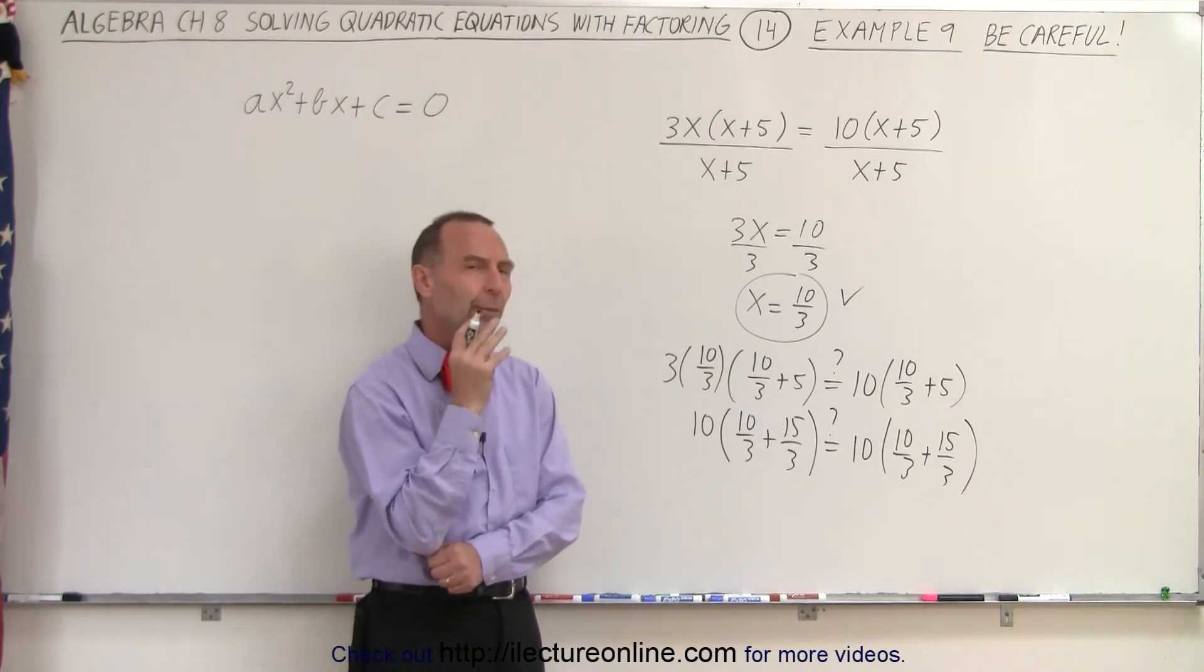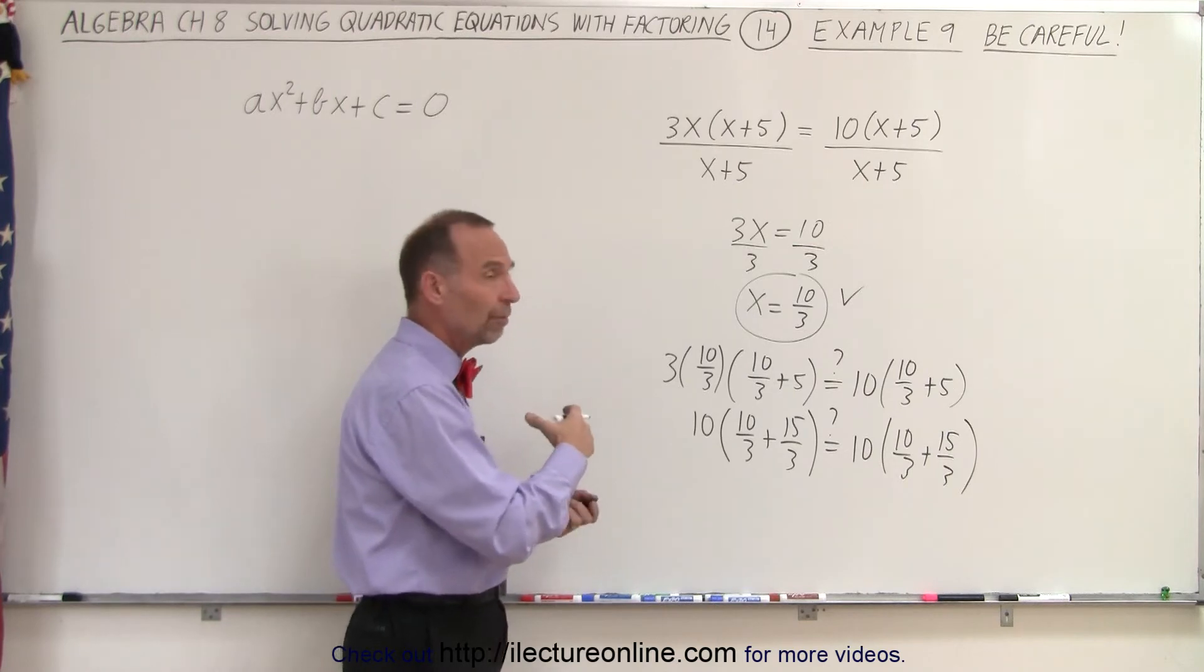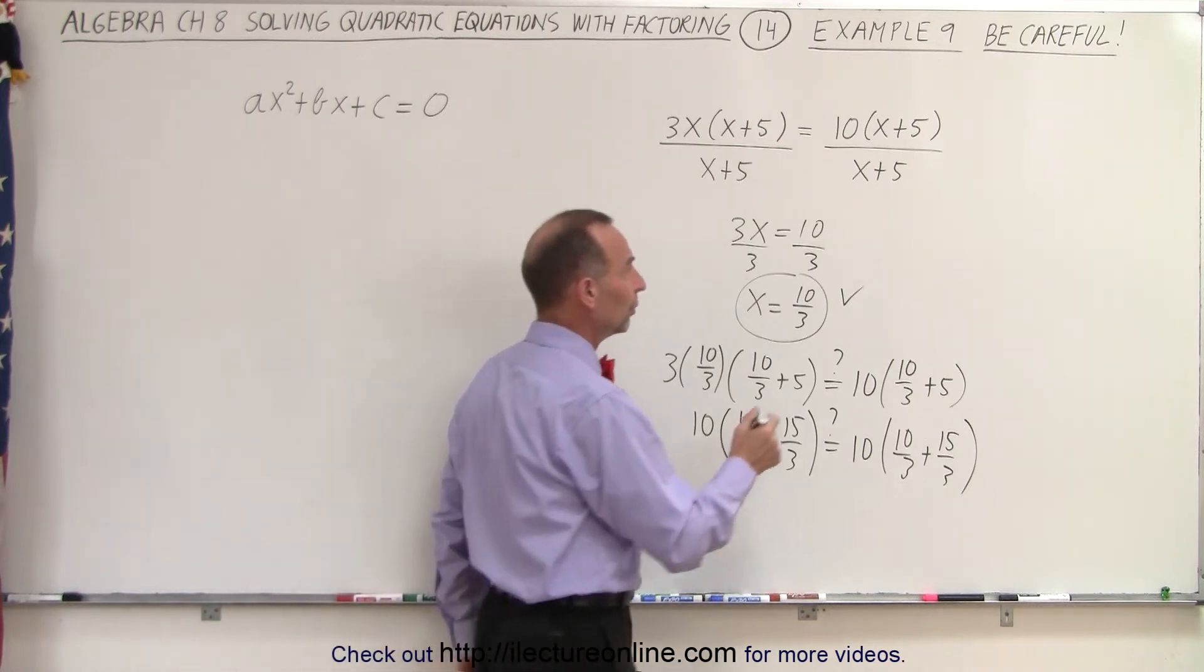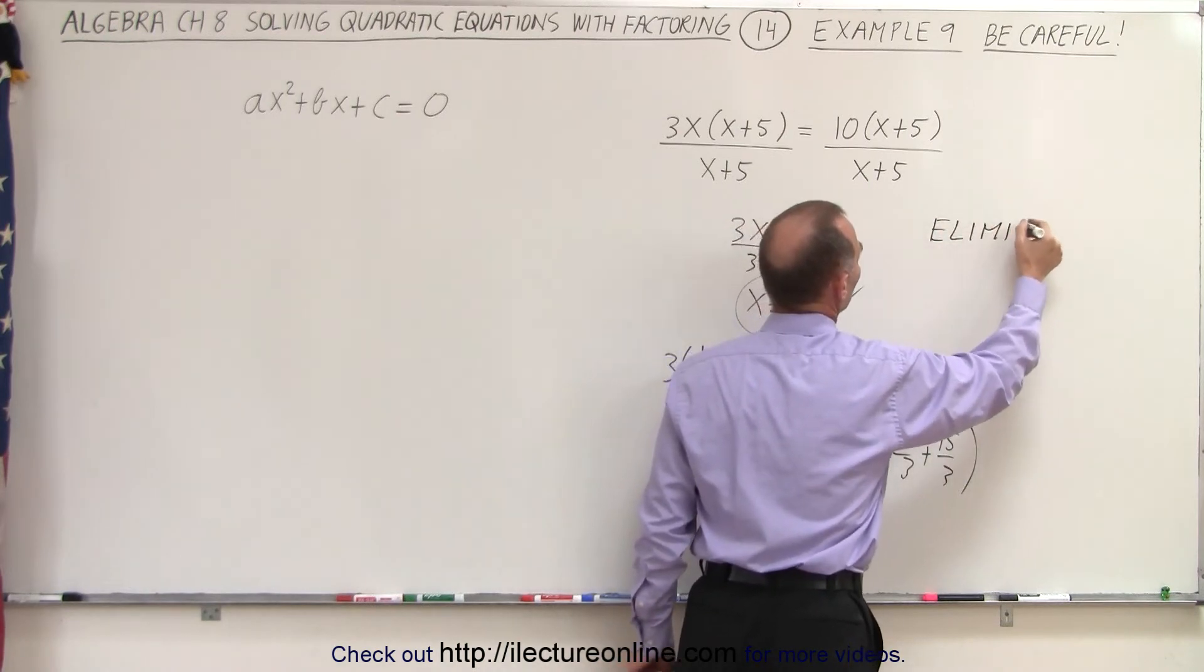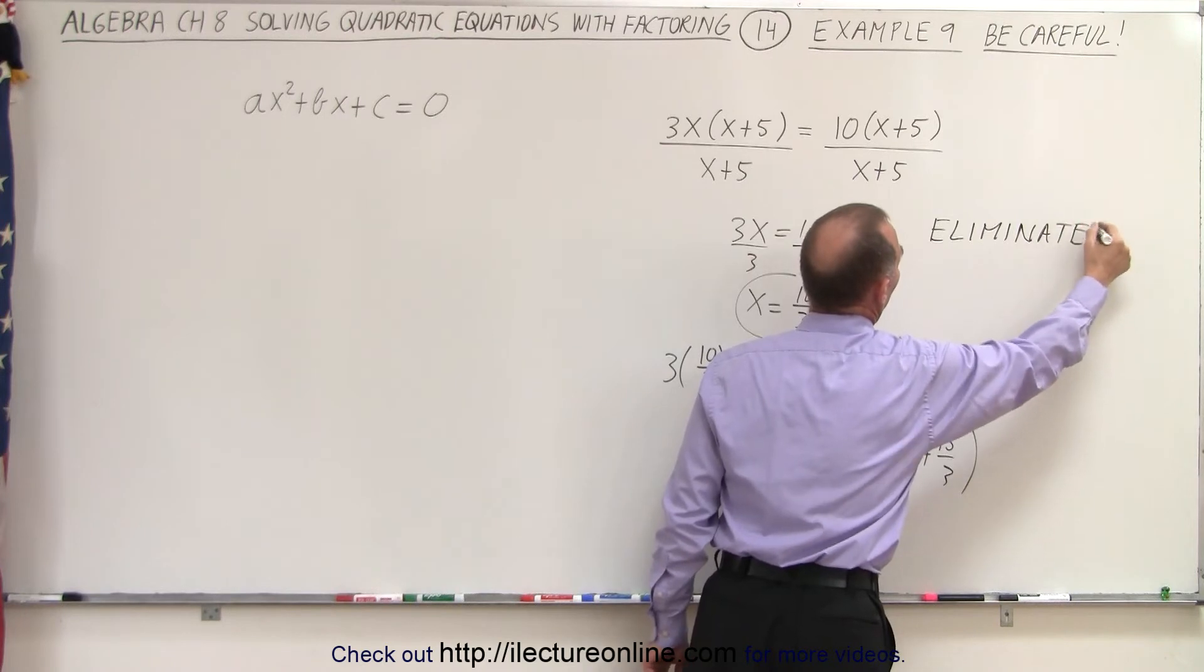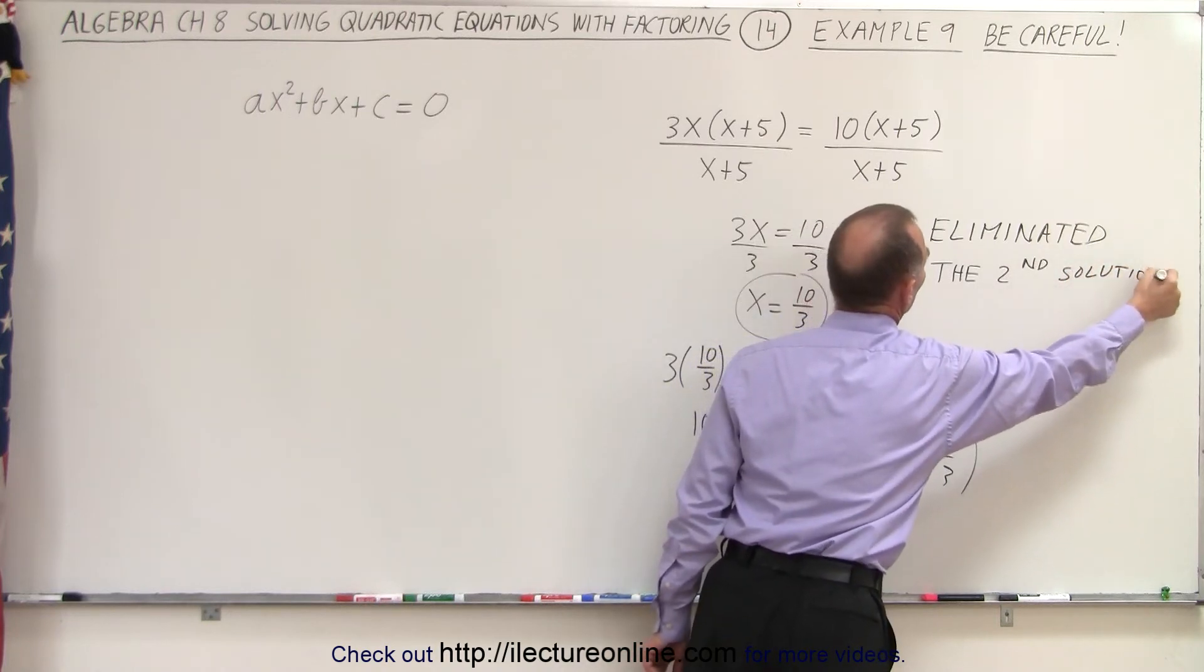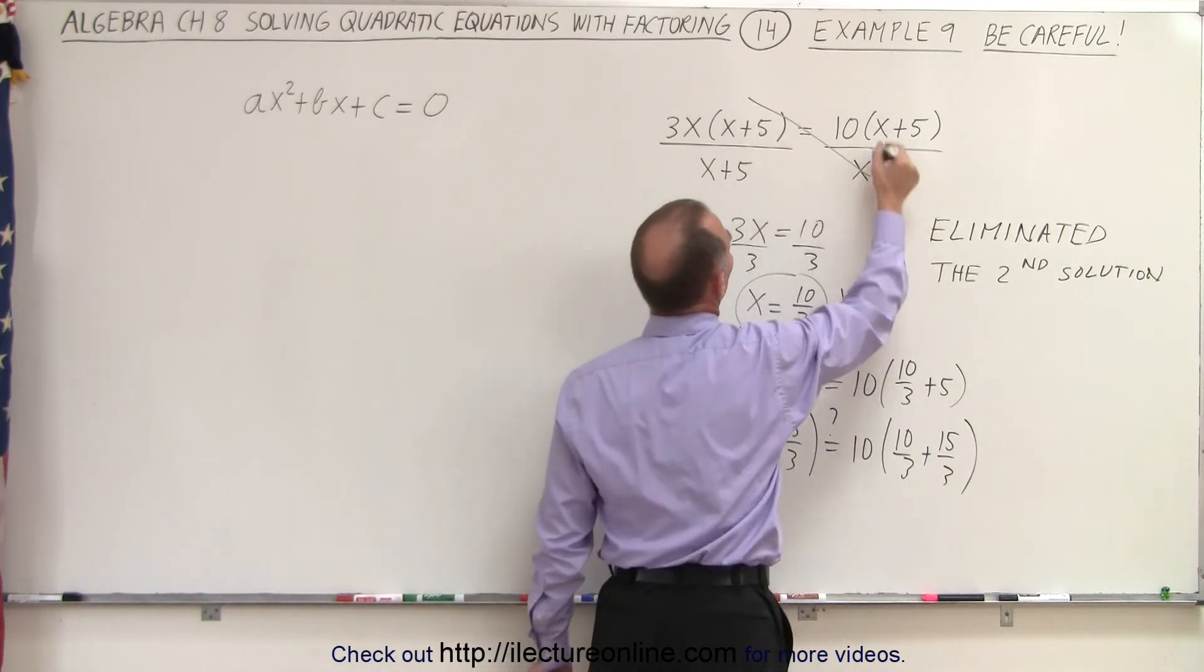So what's wrong? Well whenever you divide an equation by some factor or some combination of its variable you may eliminate a possible solution. So by doing this we have what we call eliminated the second solution. And so we should not do what we did. Not a good method. So do not do that.